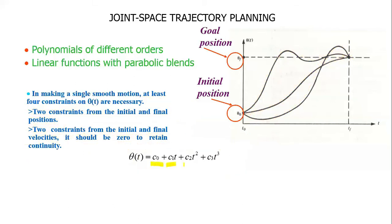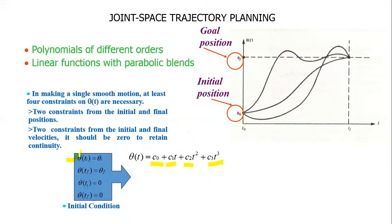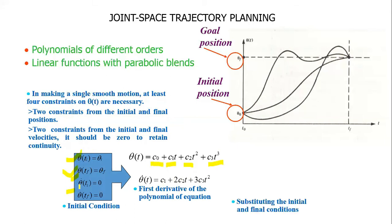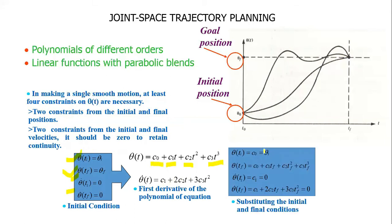These constants can be identified as follows. We have four initial conditions. Taking the first derivative of the polynomial gives us an expression for velocity. After substituting all the initial conditions, we get equations that give us constants C0 and C1 directly. The remaining two constants, C2 and C3, can be solved using the remaining two equations.